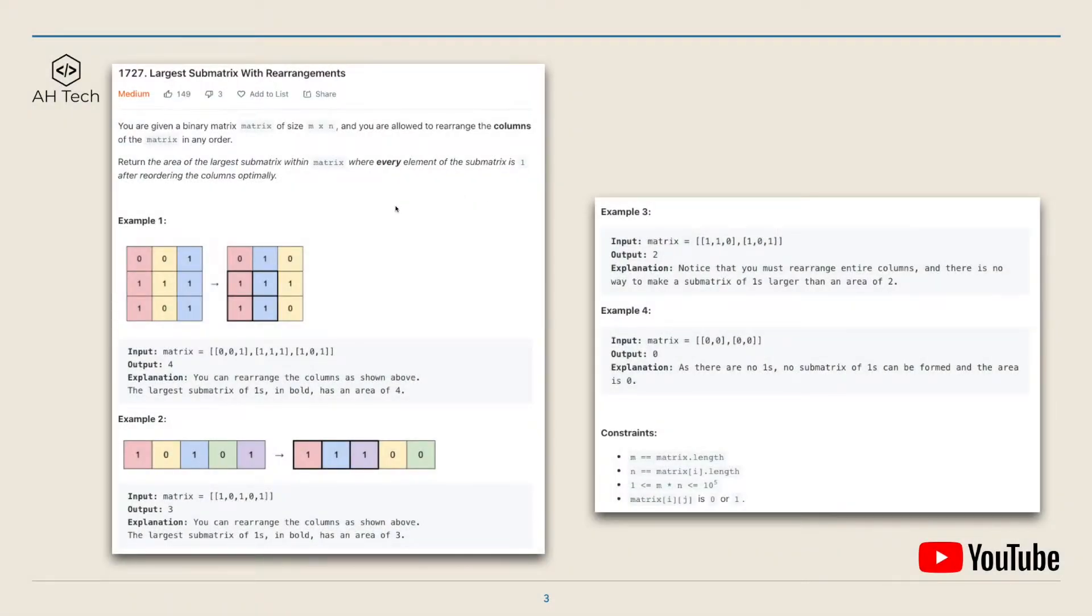The question statement: we are given a binary matrix and we are allowed to rearrange the columns of this matrix in any order we want. And we have to return the area of the largest sum matrix that every element in this sum matrix is one, after reordering the columns optimally.